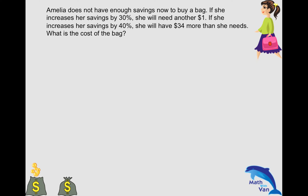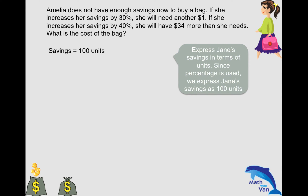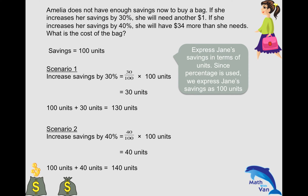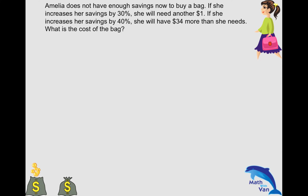Looking at this question, we have percentages, so we want to express everything in terms of units. Since the base is savings, let's call savings equal to 100 units. We can then work out quite comfortably, just like a direct conversion. An increase of 30 percent becomes 130 units. Likewise, in scenario two, she increases her savings by 40 percent, so that becomes 140 units.